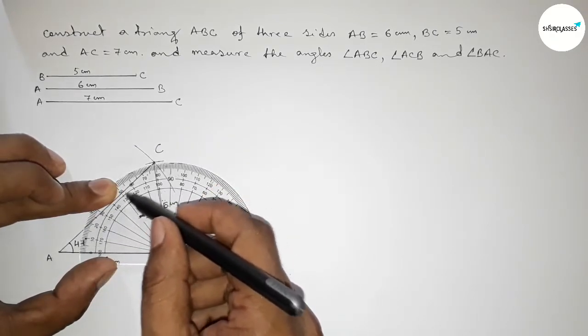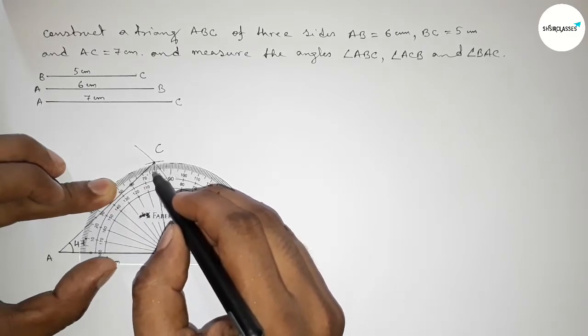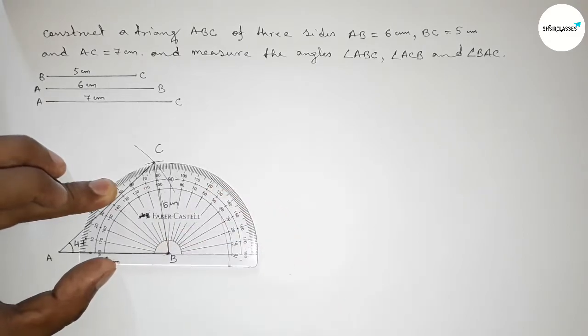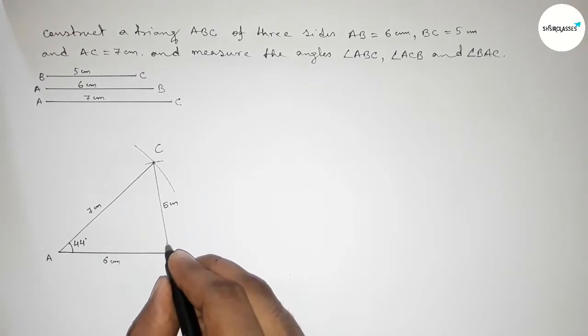This is 70, 75, 76, 77, 78, 79. So angle ABC equal to approximately 79 degrees.